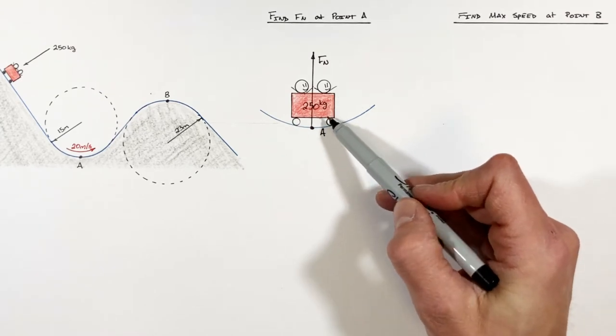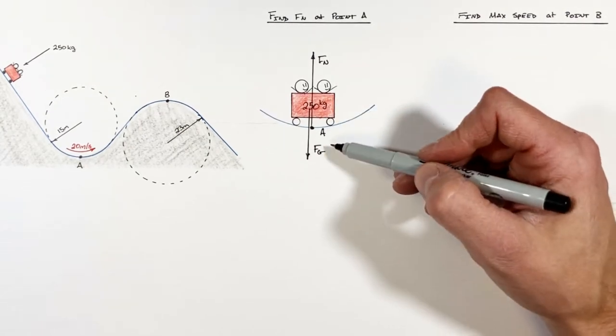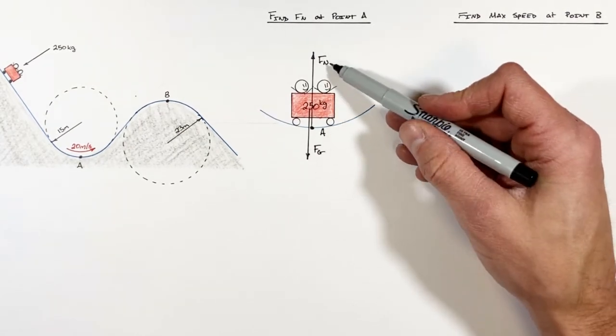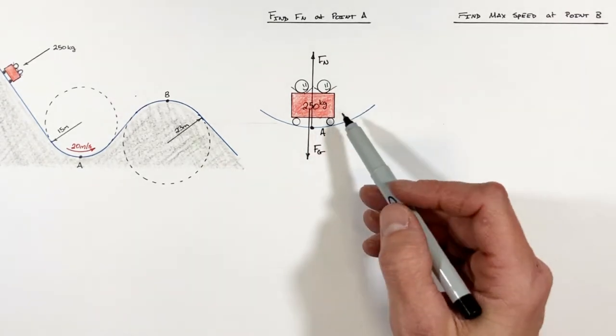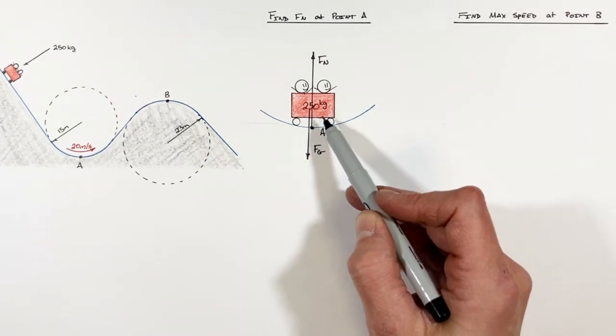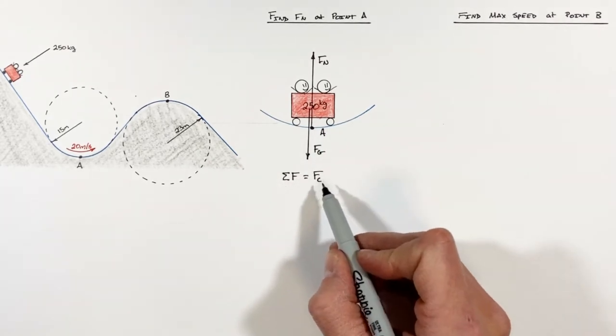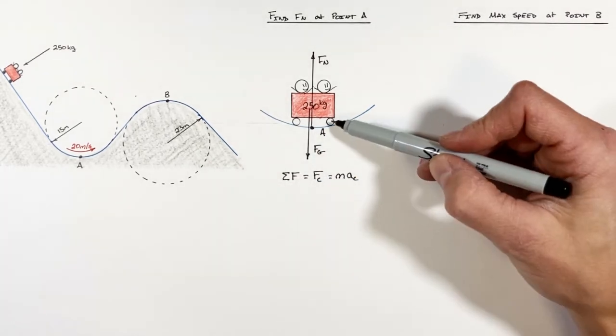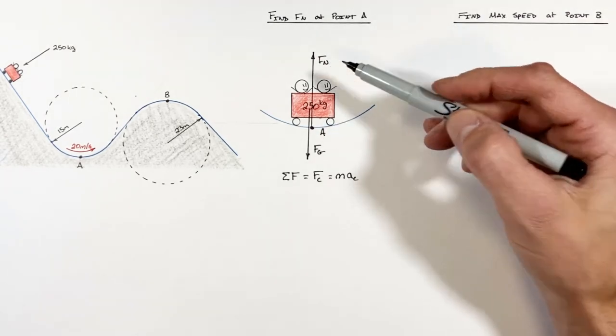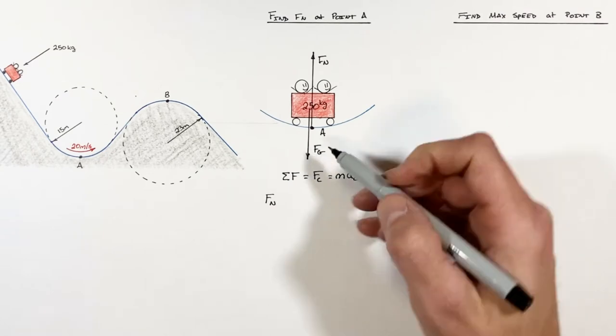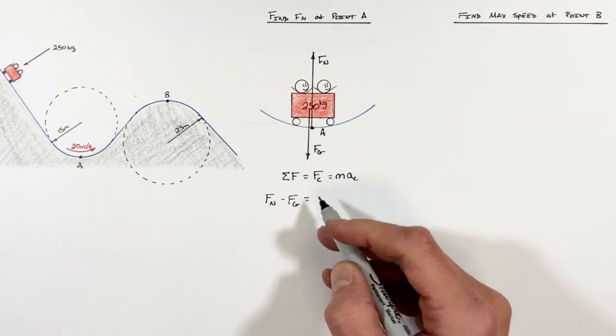But what people forget about in this problem is that there's also gravity acting on the cart. And because there's two forces acting on this cart, you can't simply set one of the forces like the normal force equal to the centripetal force. Remember the centripetal force is in fact the net force on this cart, and it's that net force which is going to cause this cart to accelerate centripetally. So if we say toward the center of the circle is positive, what we have is the normal force in the positive direction and gravity in the negative direction. And those two forces combine to be the centripetal force.